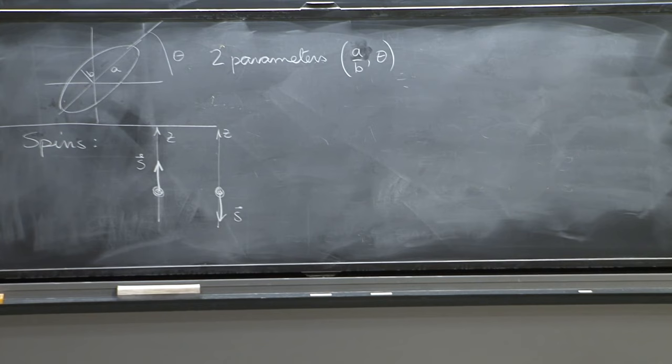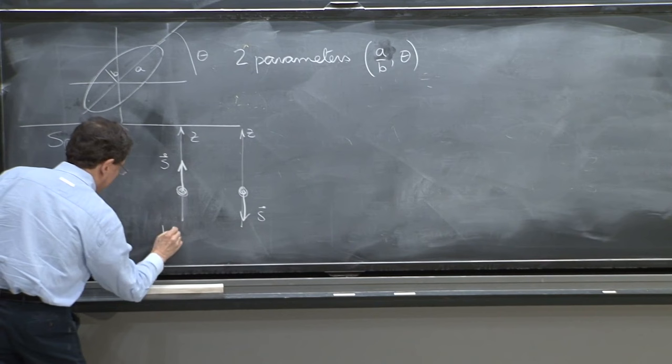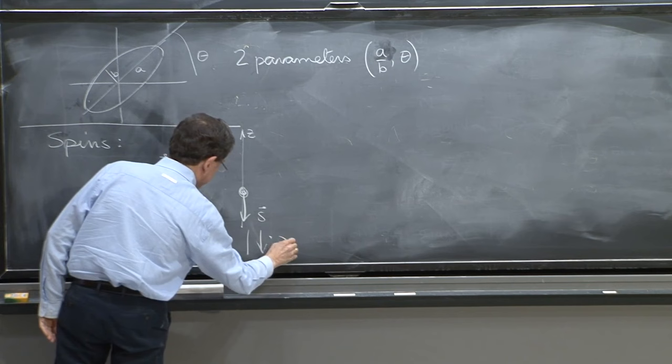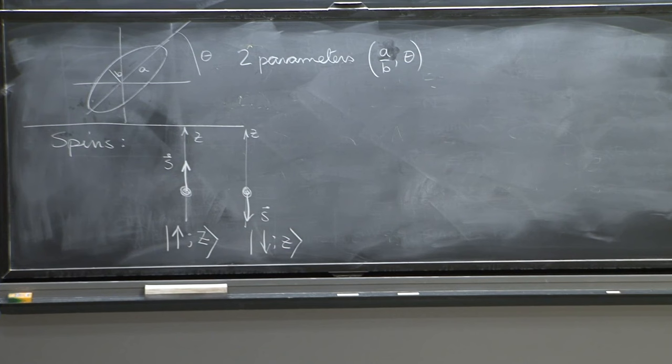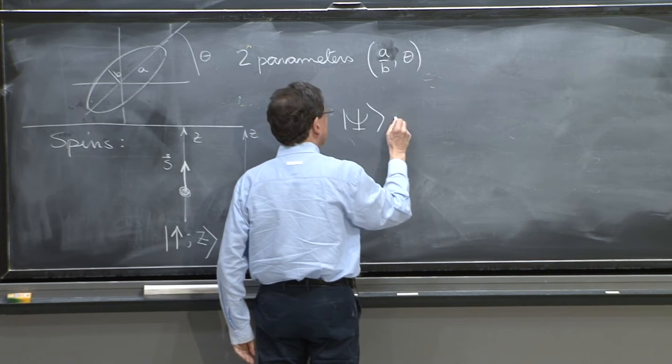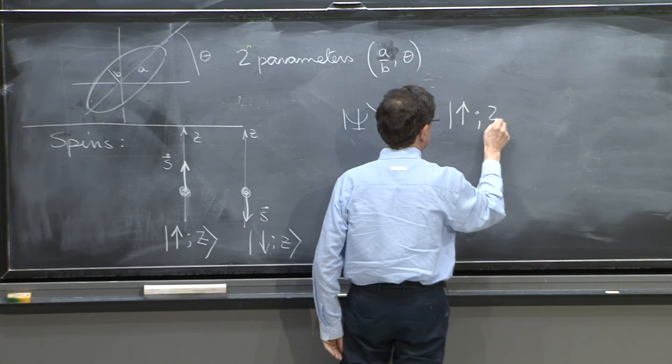And the state where it is up, we sometimes denote it with an arrow up and colon z, because it's up along z. And this would be down, arrow down along z. But if those are possible quantum states, you could build a new quantum state by superposition, which would be up along z plus down along z.